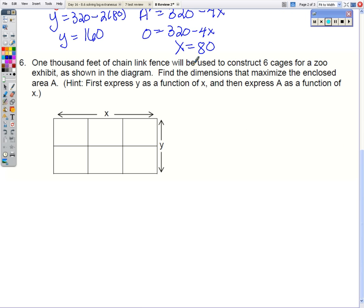Now, when we're looking at this area for the zoo, and we want 1,000 feet of fence, well, that's x plus x plus x. So that's 3 x's plus 1, 2, 3, 4 y's for the 1,000 feet of fence. And we want to maximize the area.